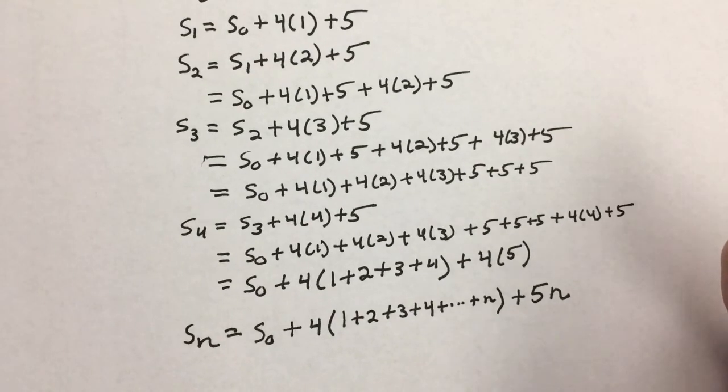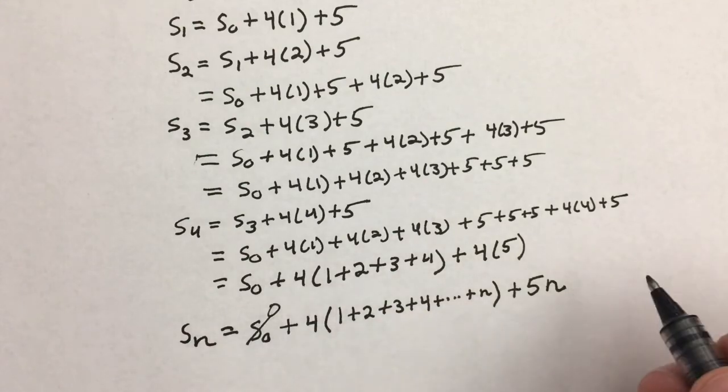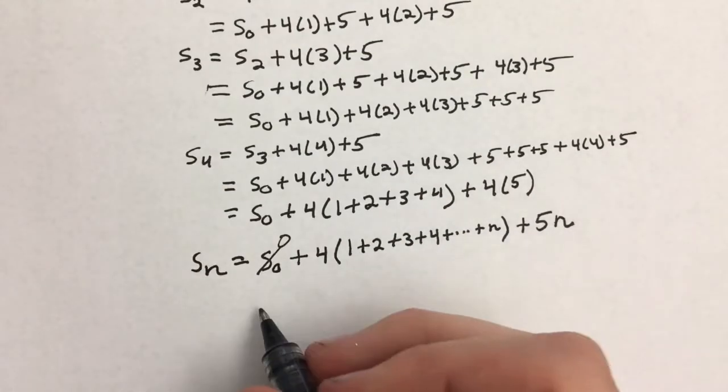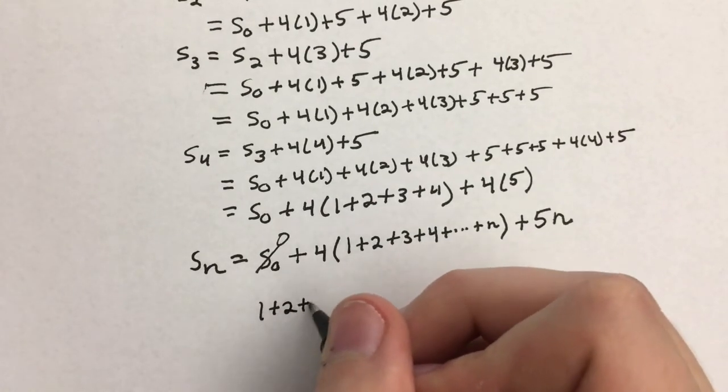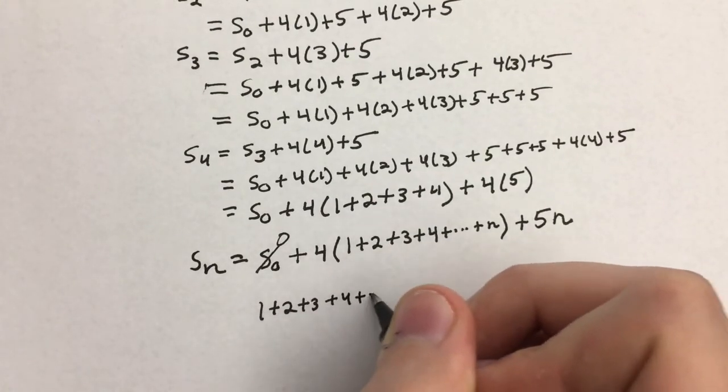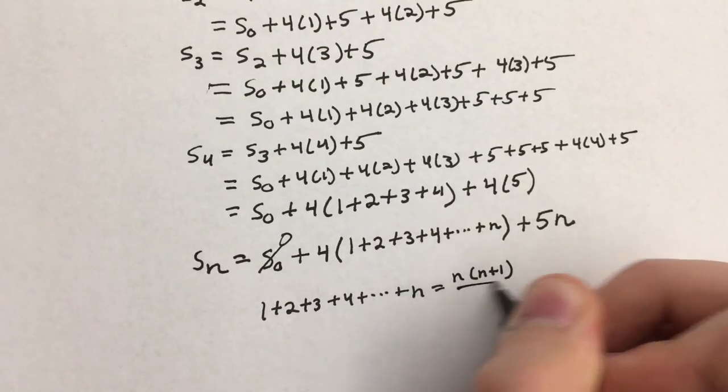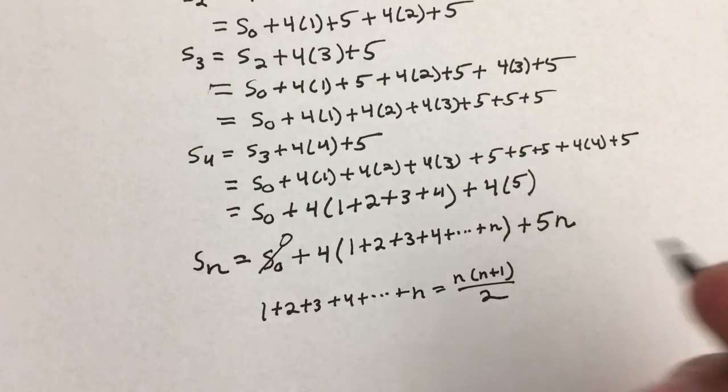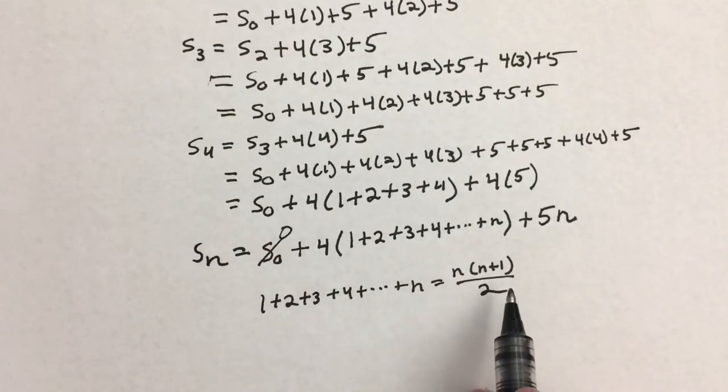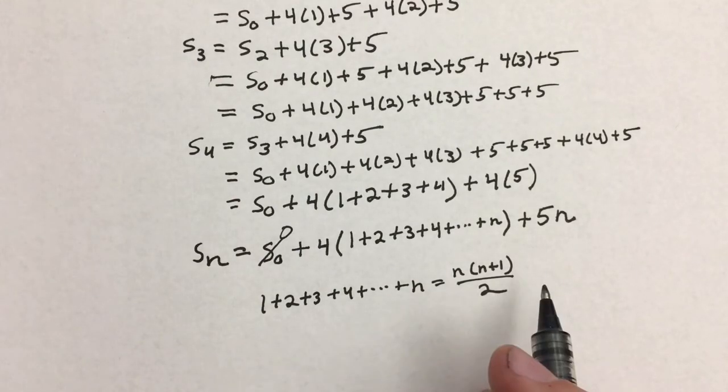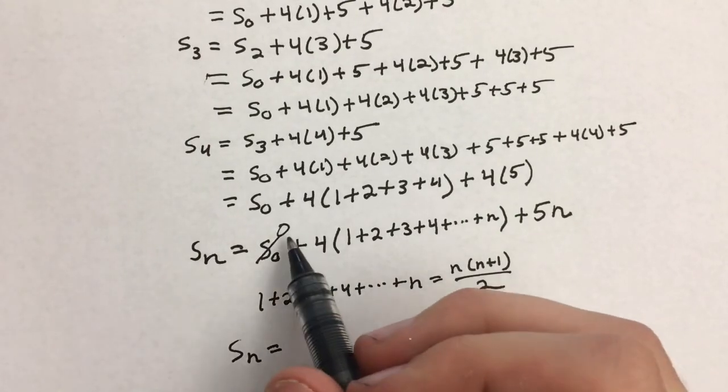And so now we're pretty much done. We're going to make this S sub 0 a 0 to match our initial condition. The other thing we're going to do is we're going to use this property here. We know that 1 plus 2 plus 3 plus 4 plus dot dot dot plus n is equal to n times (n plus 1) over 2. This is something you should know. This is a basic property for the sum of the first n integers. You will see this a lot in mathematics.